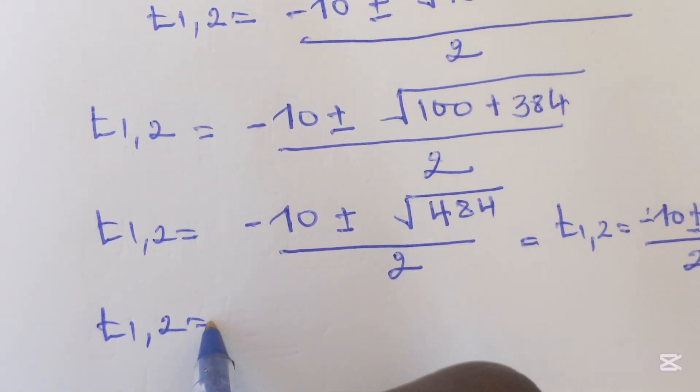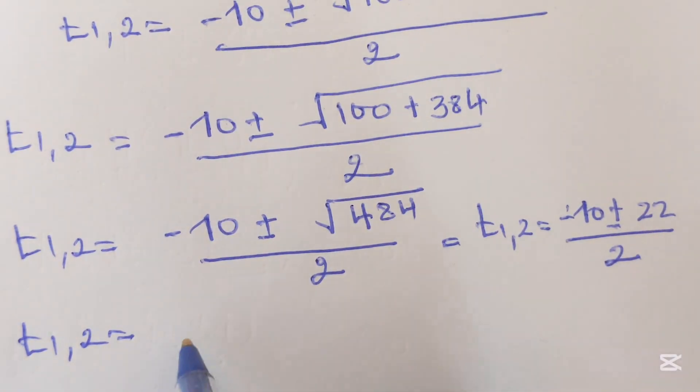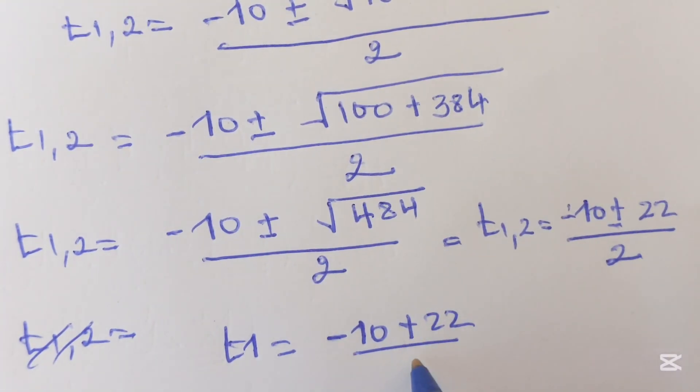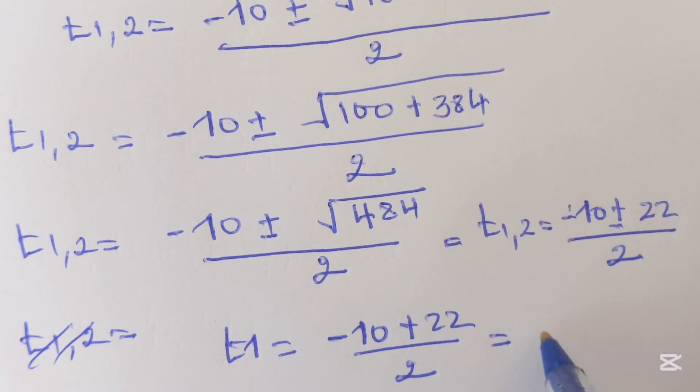t1 can be equals to negative 10 plus 22 over 2. This will provide 12 over 2, which is equal to 6.